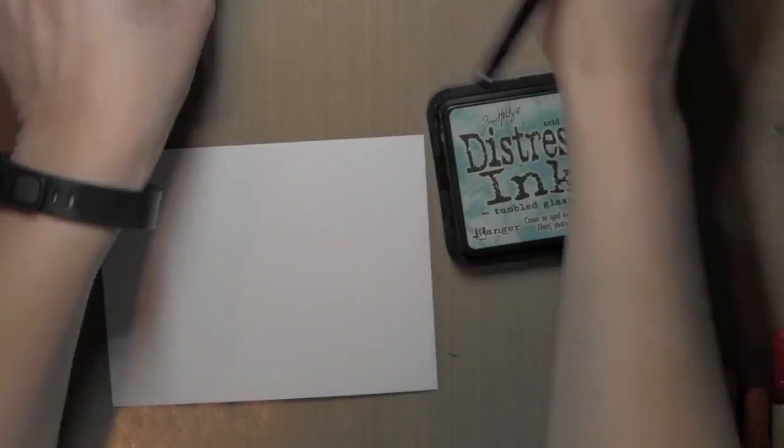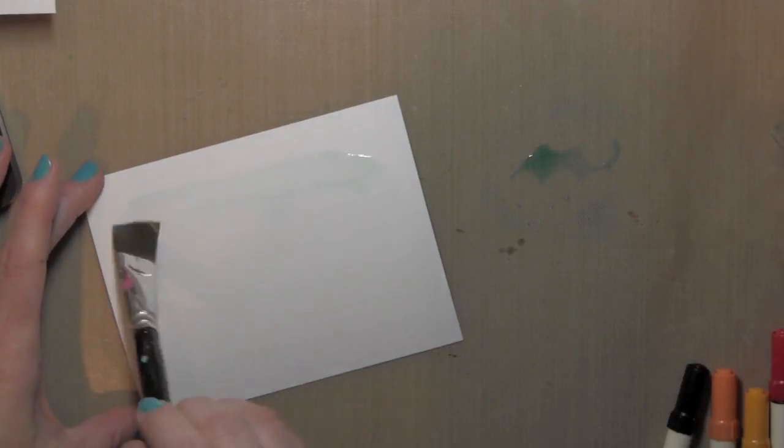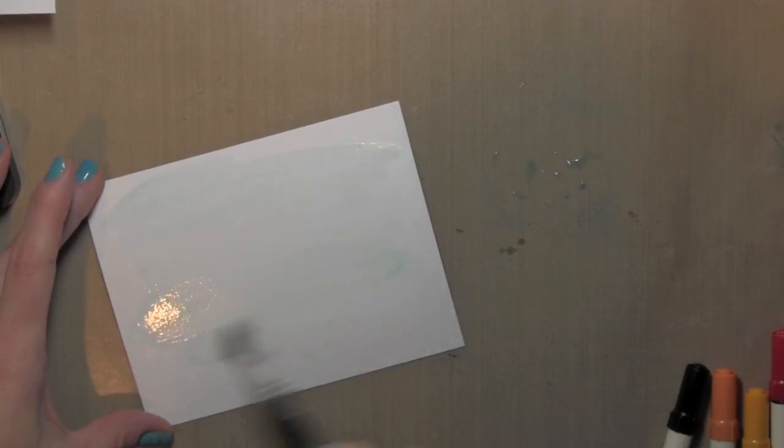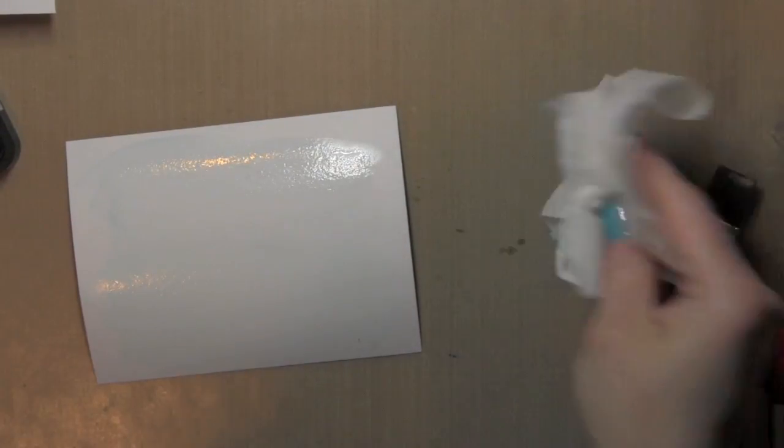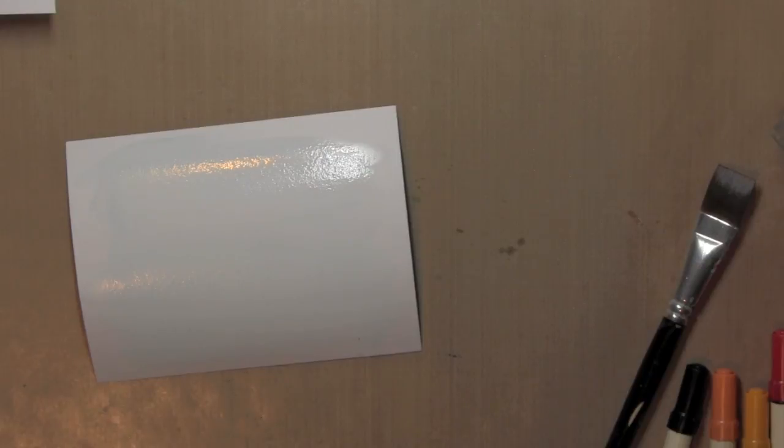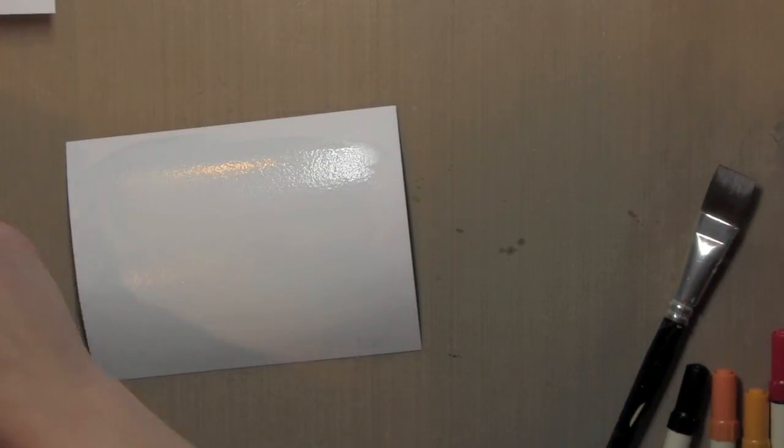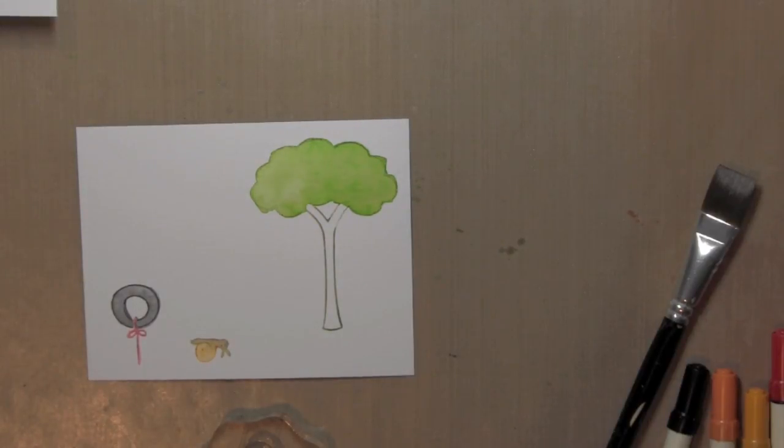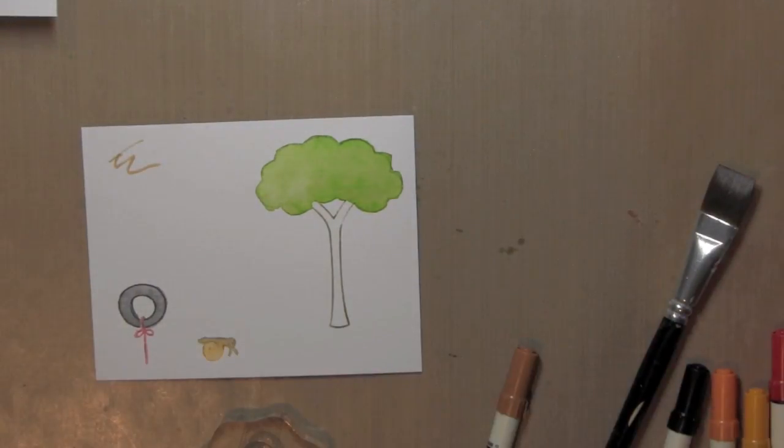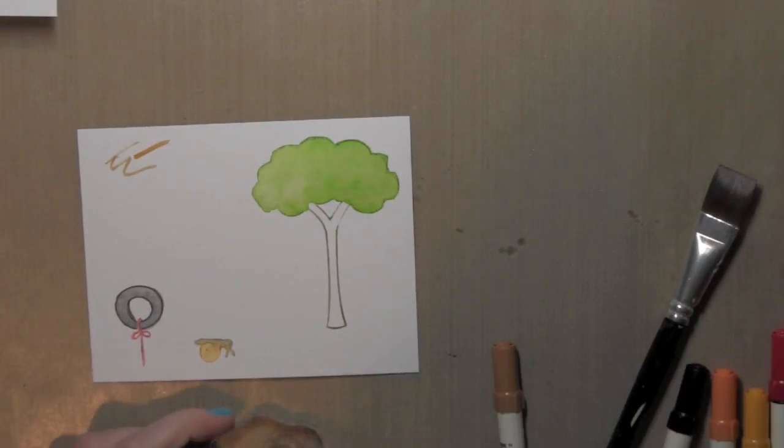I am going to stamp the squirrel as well, and color him in, as well as the other little images. I did take the tumbled glass distress ink over a whole new sheet of Tim Holtz watercolor paper, and just brushed it on really lightly. It's a light color anyway. I dampened my background first, and then spread that on, and I set it aside to dry because I need it here in a little bit for when I put my card together.